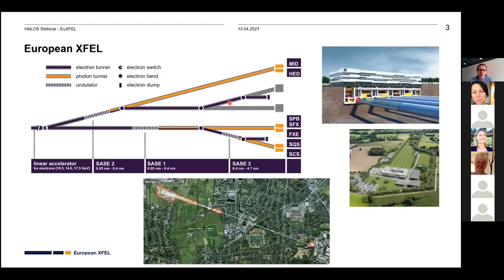European XFEL is a superconducting linear accelerator located at the border between the federal states of Hamburg and Schleswig-Holstein. The accelerator starts at the premises of DESY and heads roughly three kilometers west, underground. The first two-thirds of the tunnel comprise the linear accelerator, where electrons are accelerated to 17.5 GeV, and these electrons are then used across the SASE beamlines to create photons in the soft and hard X-ray regime.